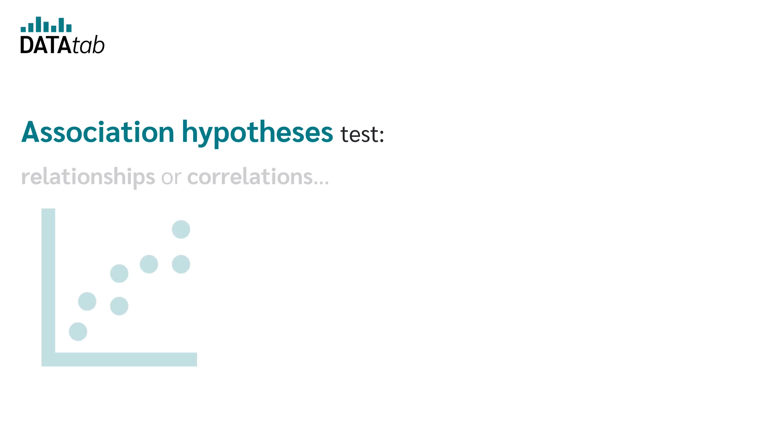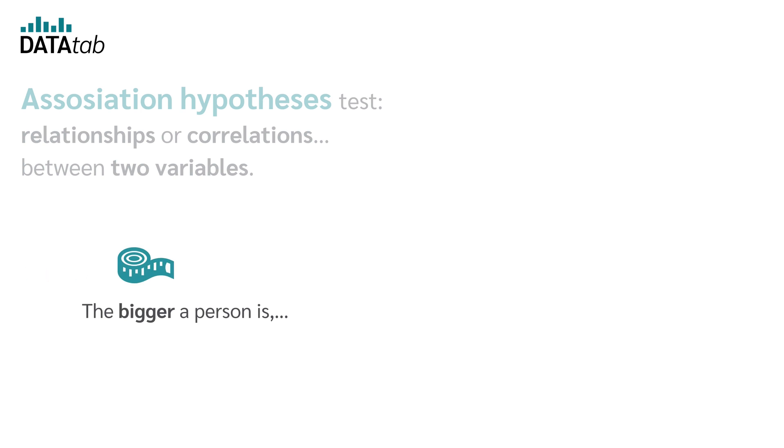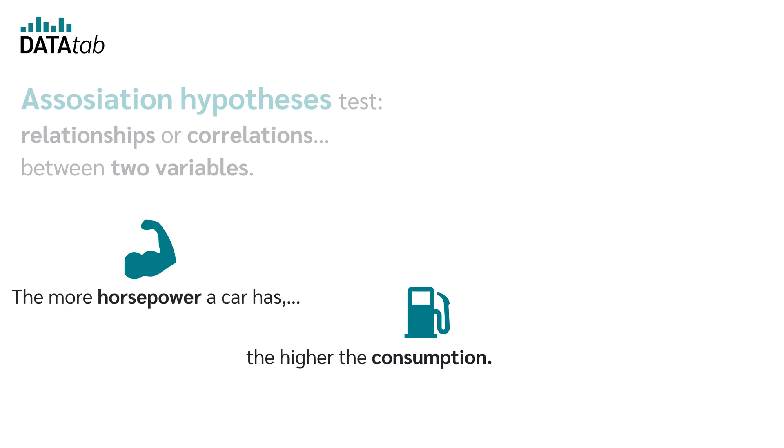Association hypotheses test relationships or correlations between two variables. An example, the bigger a person is, the heavier he or she is, or the more horsepower a car has, the higher the consumption.